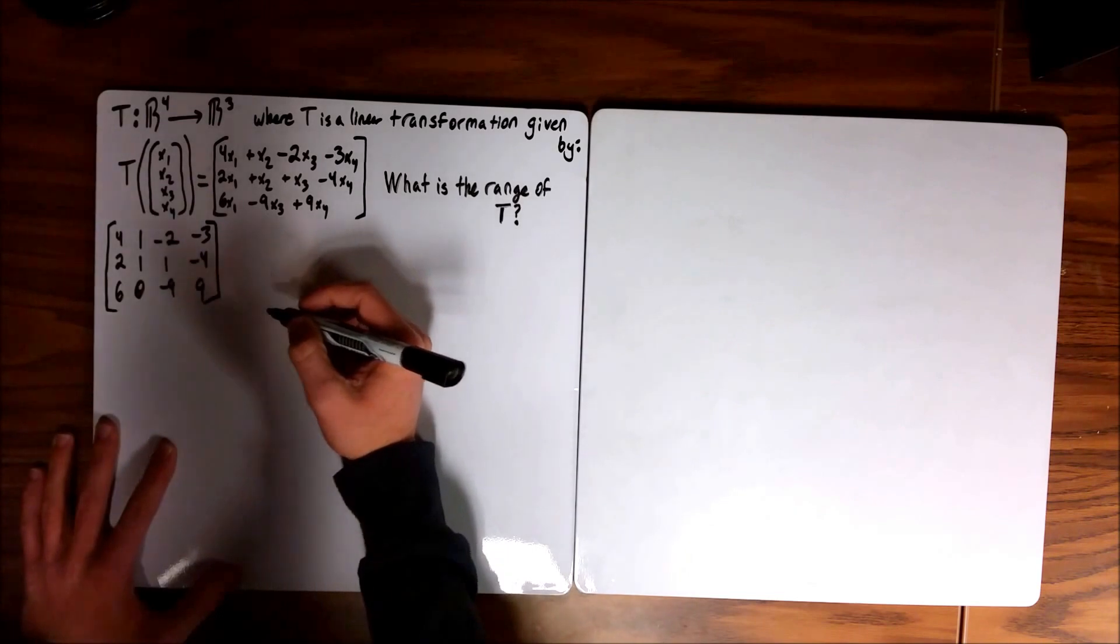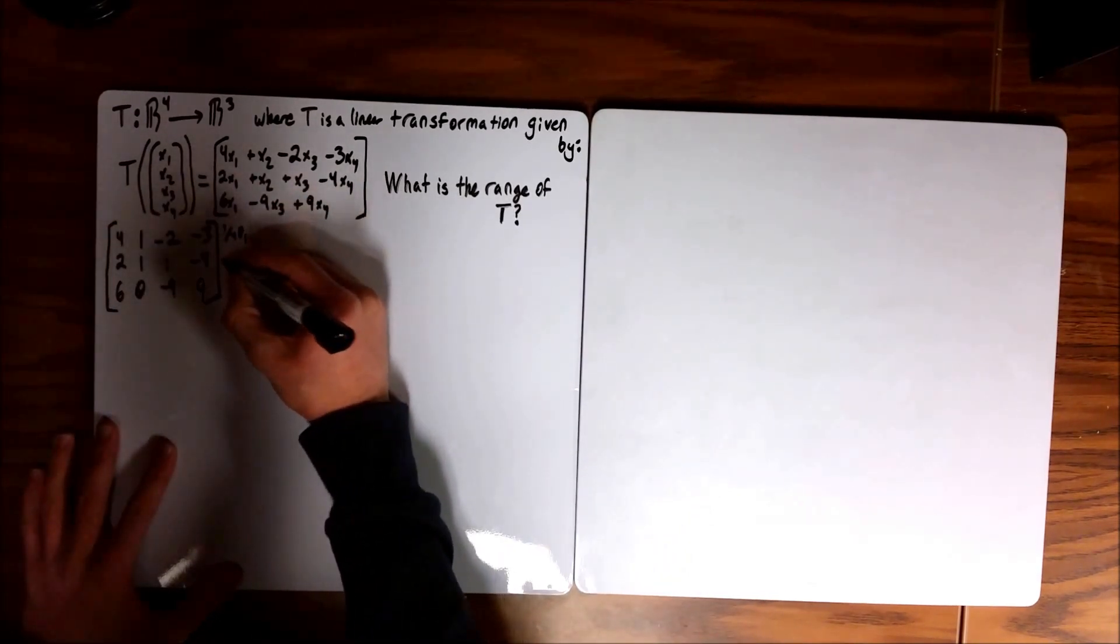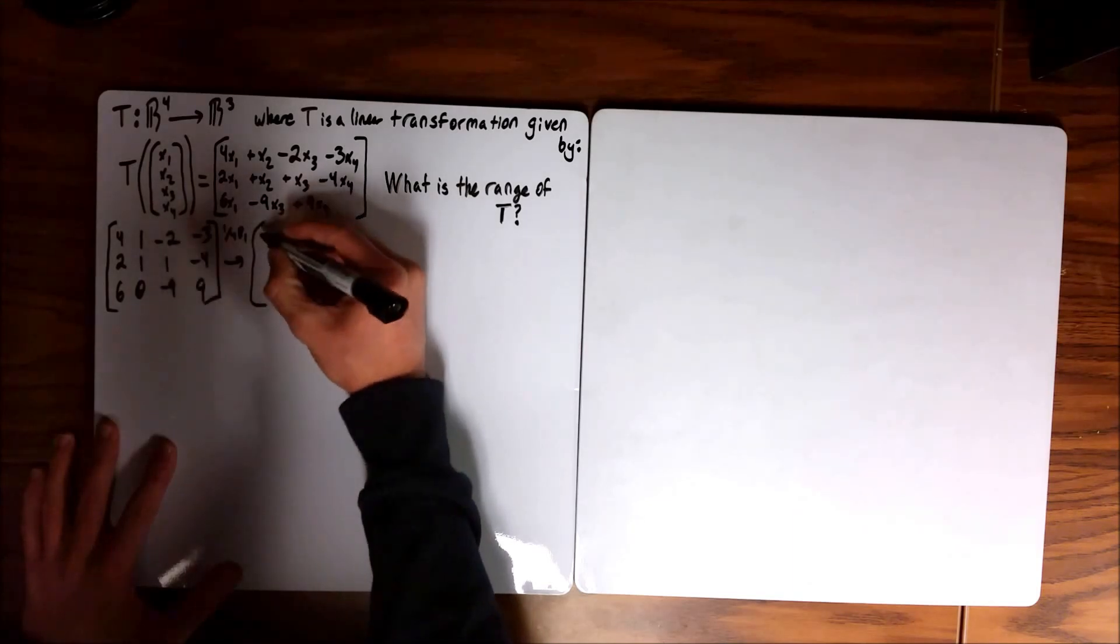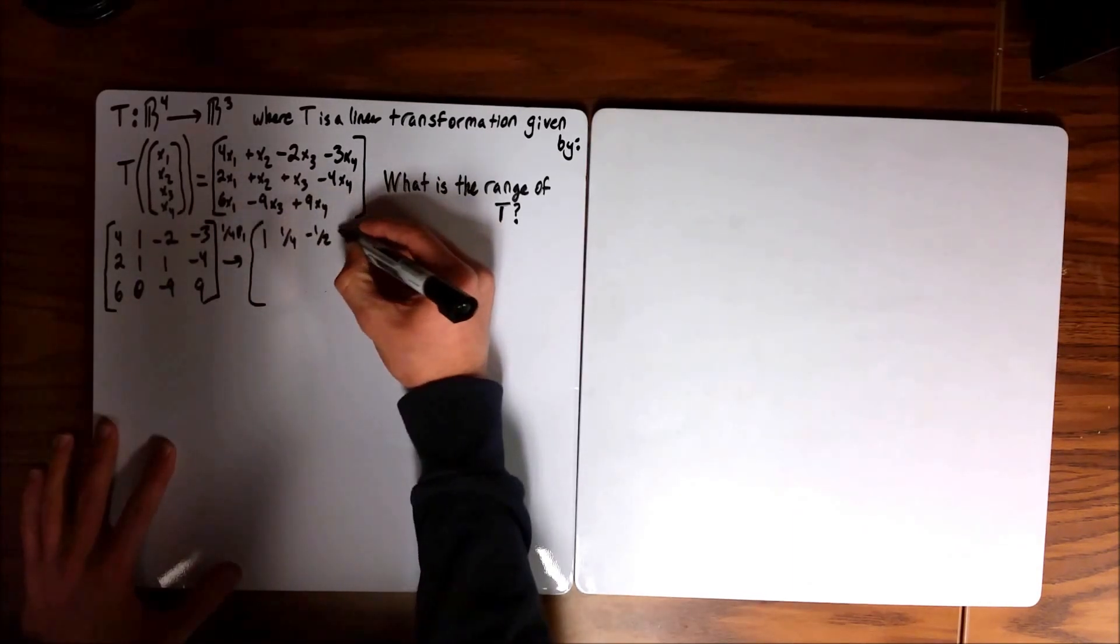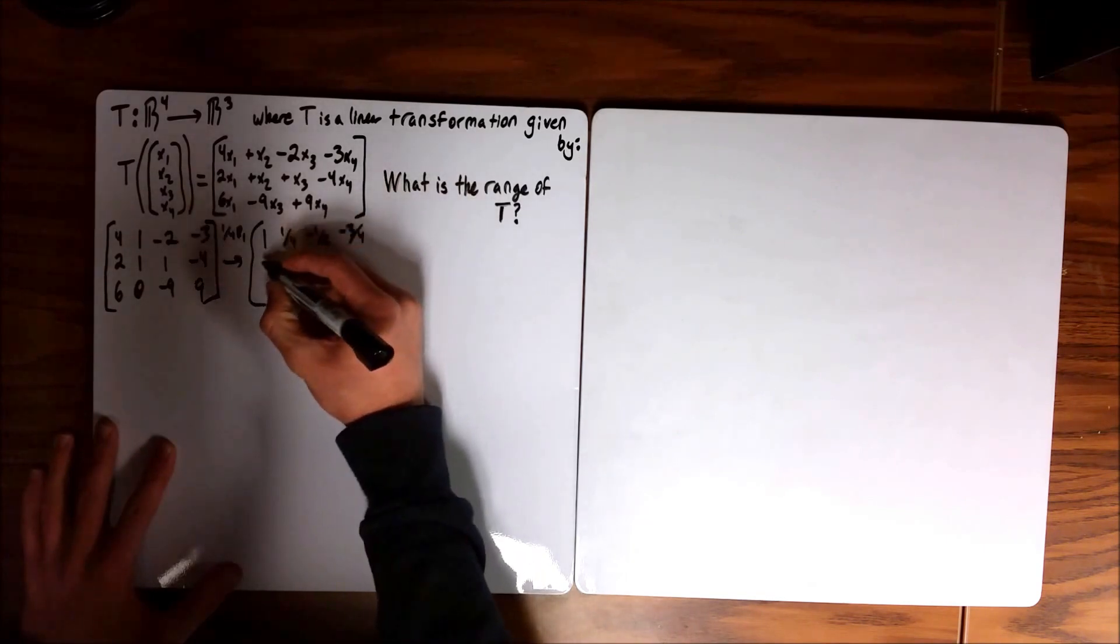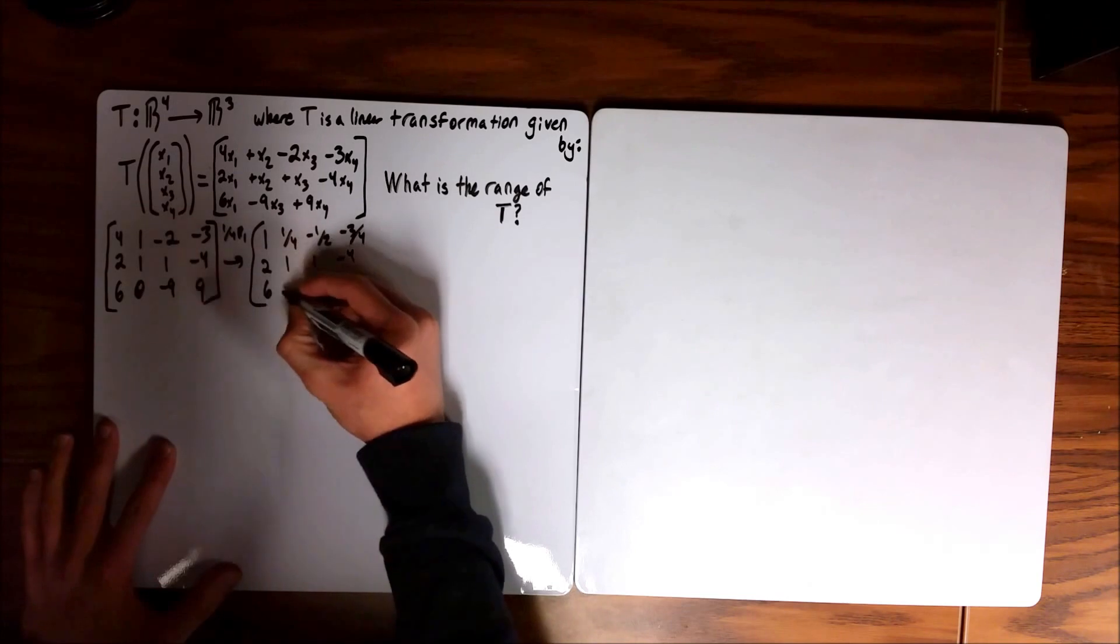And then we have to row reduce this. So the first thing we're going to do is 1 fourth of row 1, just take that over and just keep the rest of the matrix the same.